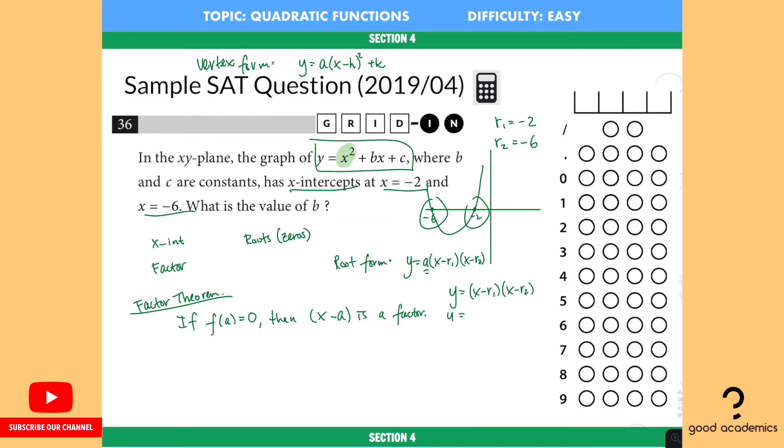And if we do that, y is equal to x minus negative 2, x minus negative 6. That means we have x plus 2, because negative times negative, you have a positive. And then you have x plus 6.